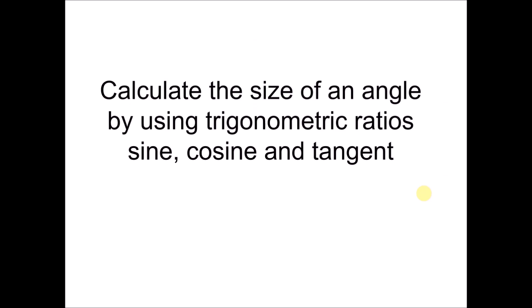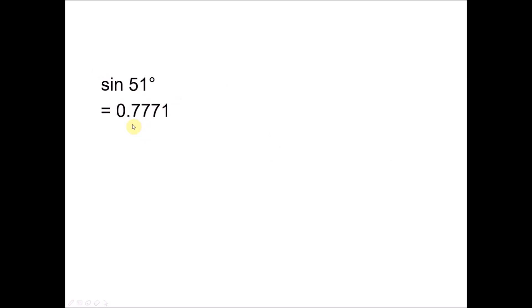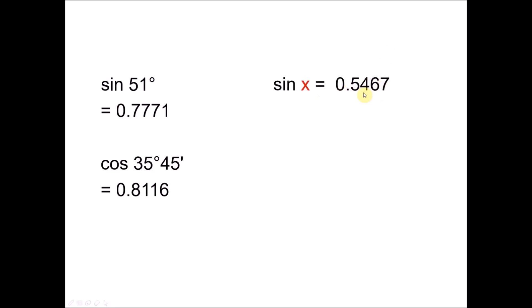We are done with the first part. Now we go to the second part: calculating the size of an angle by using trigonometric ratios. Previously, when given sine 51 degrees, we could find the value by keying it into the calculator. In this part, we flip it — you are given the value of sine but not the angle, and we want to find the value of the angle.